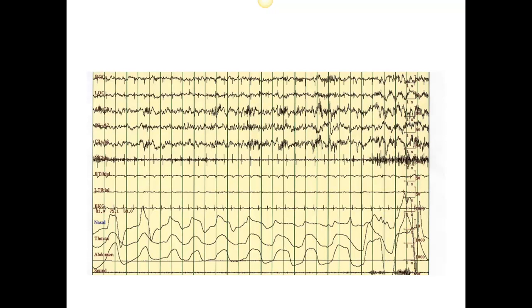Here's an example of stage two. What we see here are these bursts of several, what I'm pointing to on my cursor are sleep spindles. I don't see any definite K complexes within this epoch, but this would be scored N2.